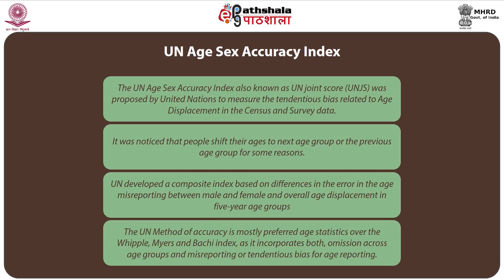The UN method of accuracy is mostly preferred in comparison to Whipple's index or Mayer's index because it incorporates both the differential omissions of persons in various age groups and the misreporting of bias in age reporting. So both are captured in this case: age misreporting, group misreporting, as well as age group misplacement.